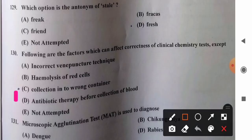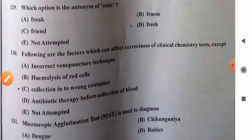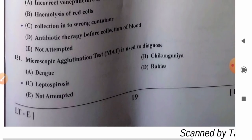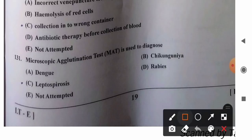Question 131: Microscopic agglutination test (MAT) is used to diagnose — options: A) dengue, B) chikungunya, C) leptospirosis, D) rabies. The microscopic agglutination test is the gold standard for diagnosis of leptospirosis. So option C, leptospirosis, is the correct answer.